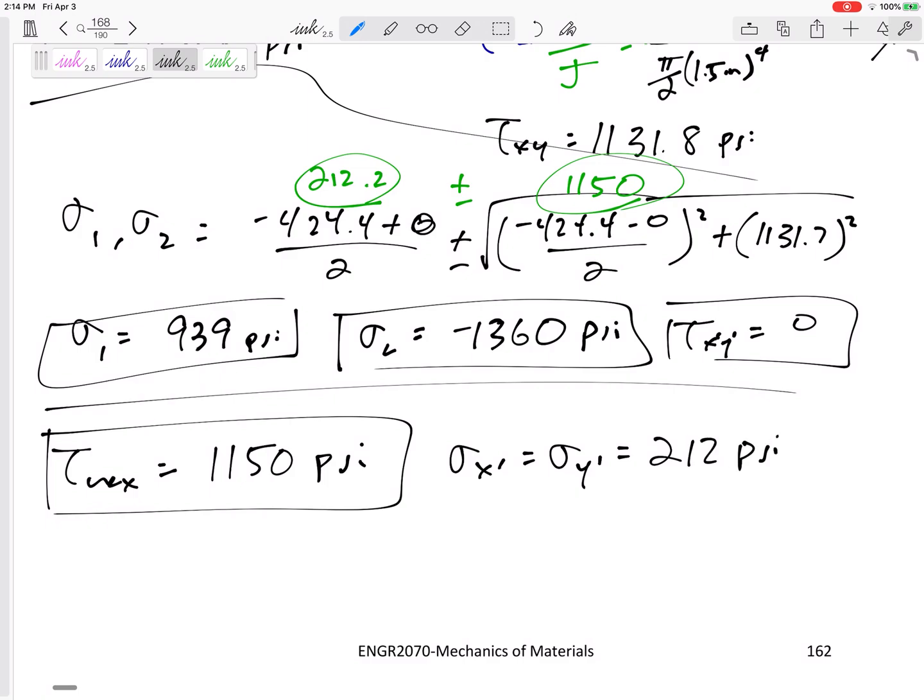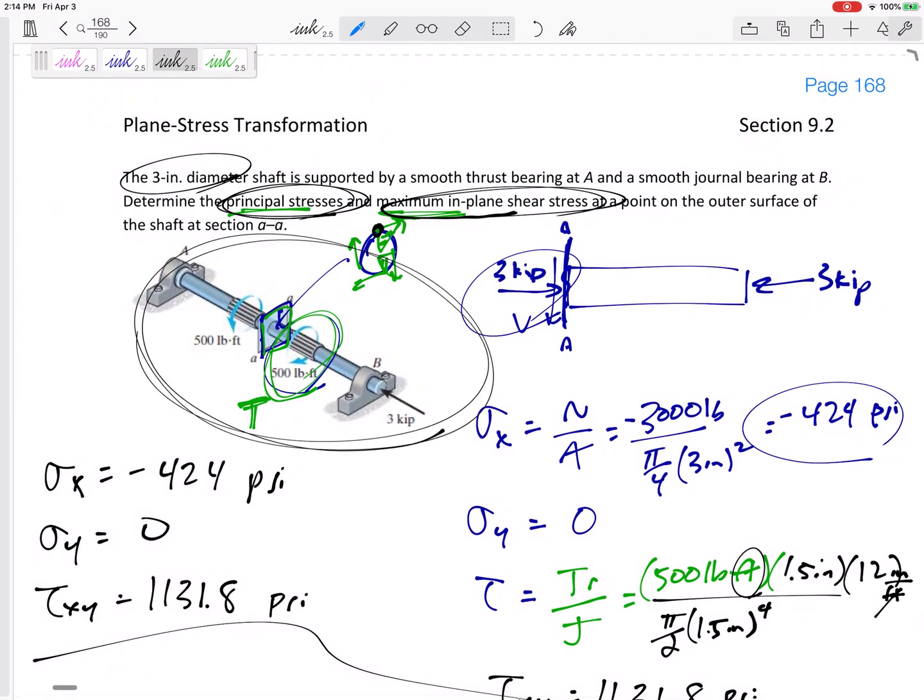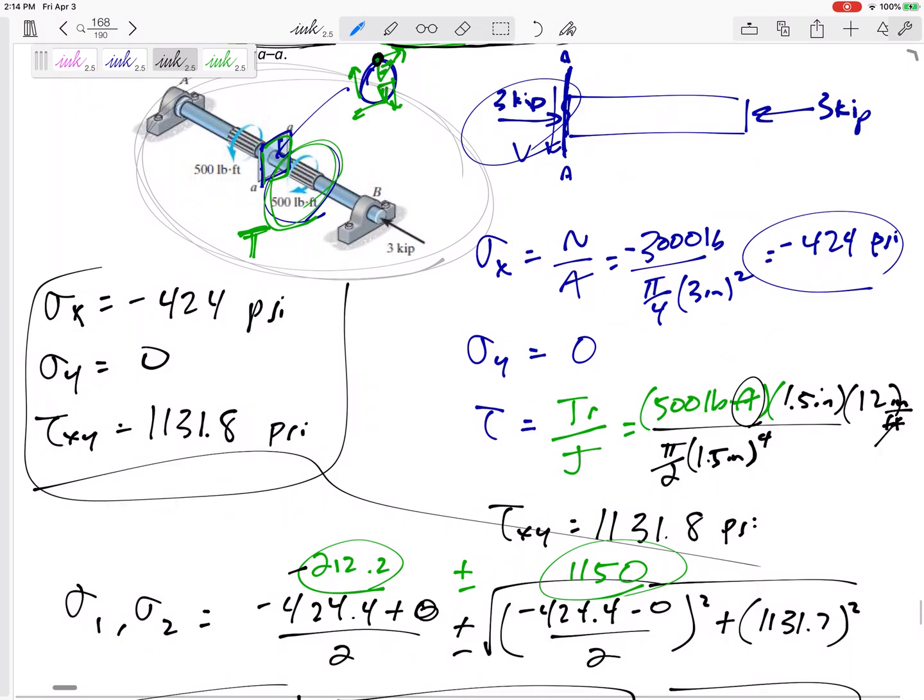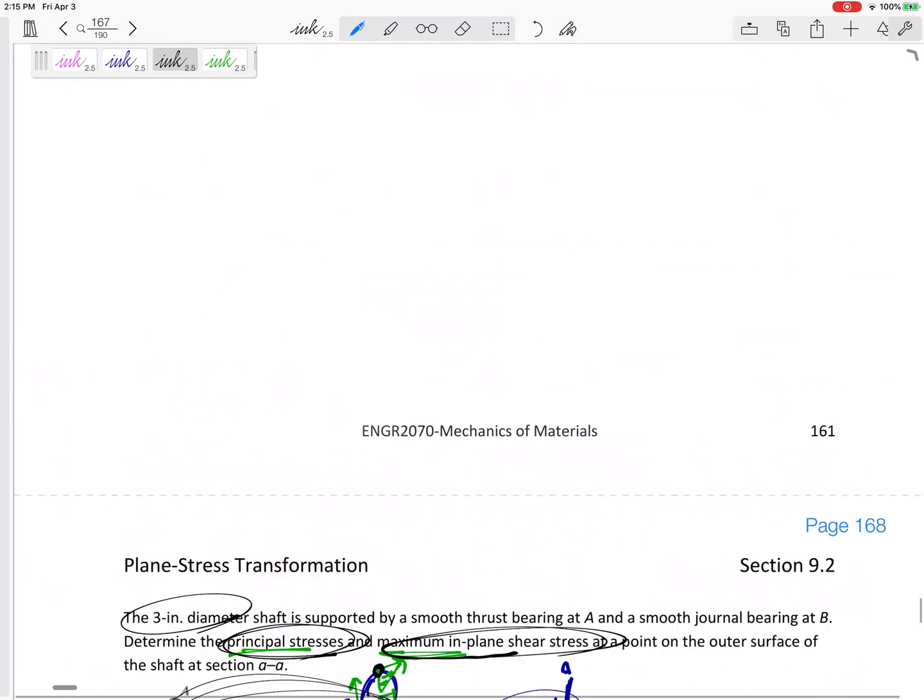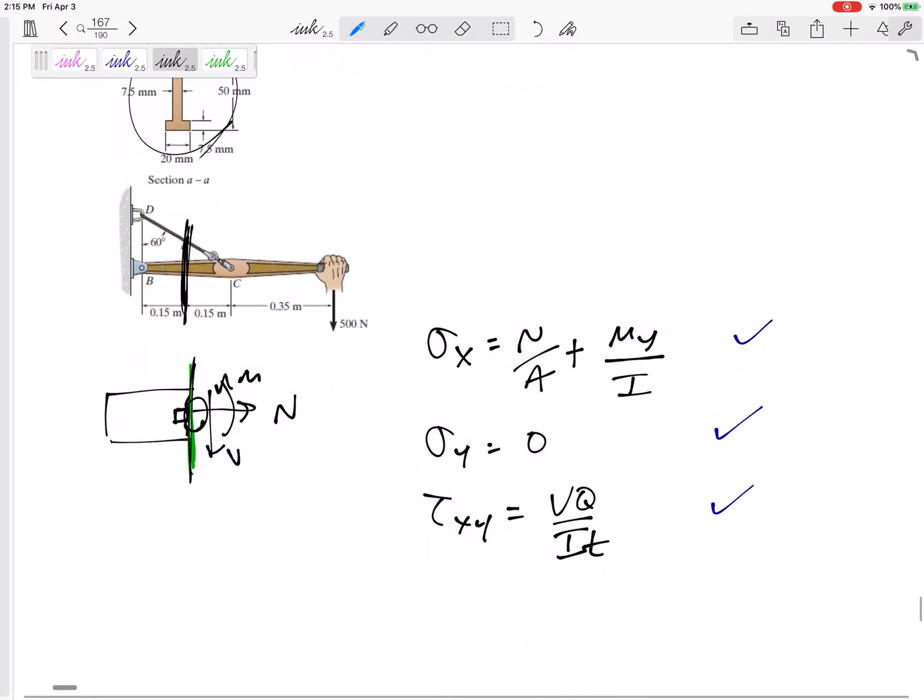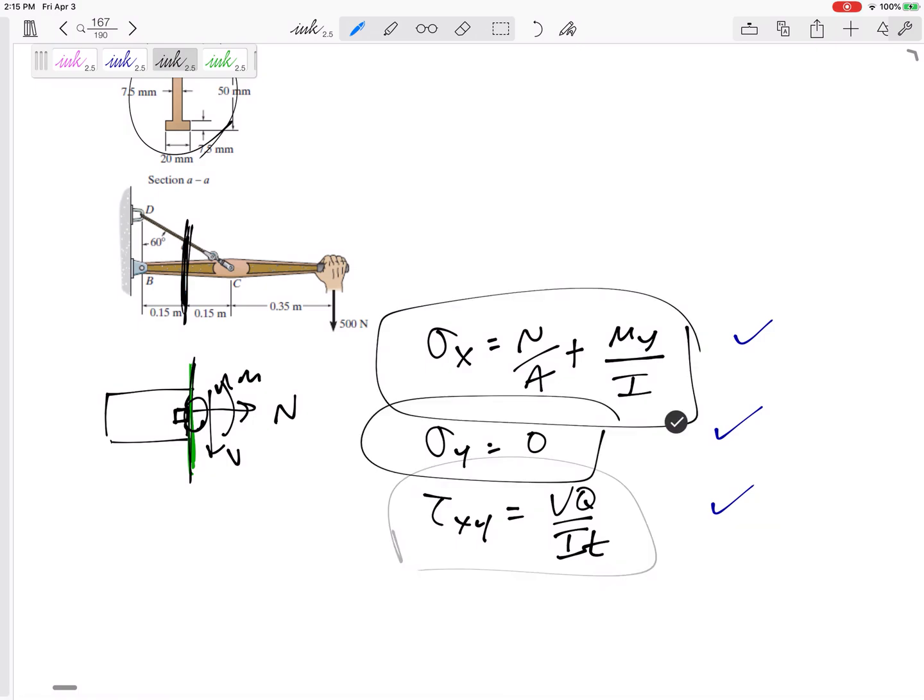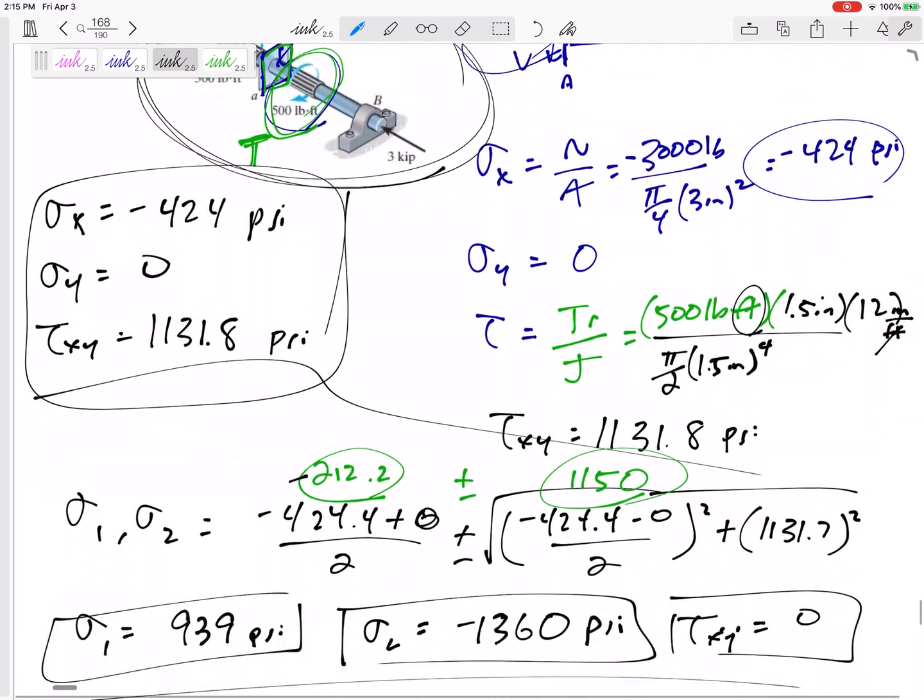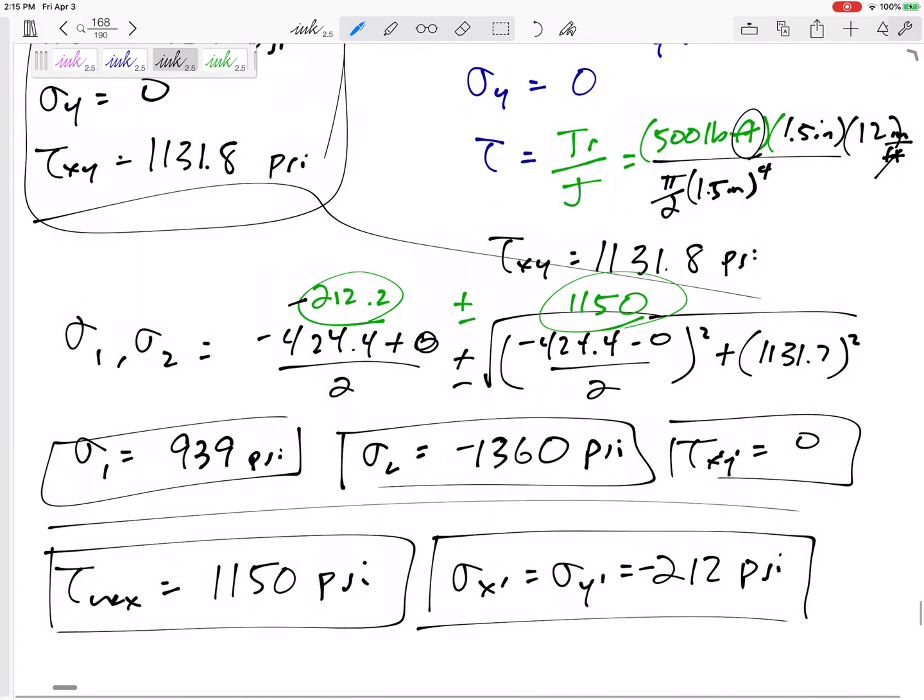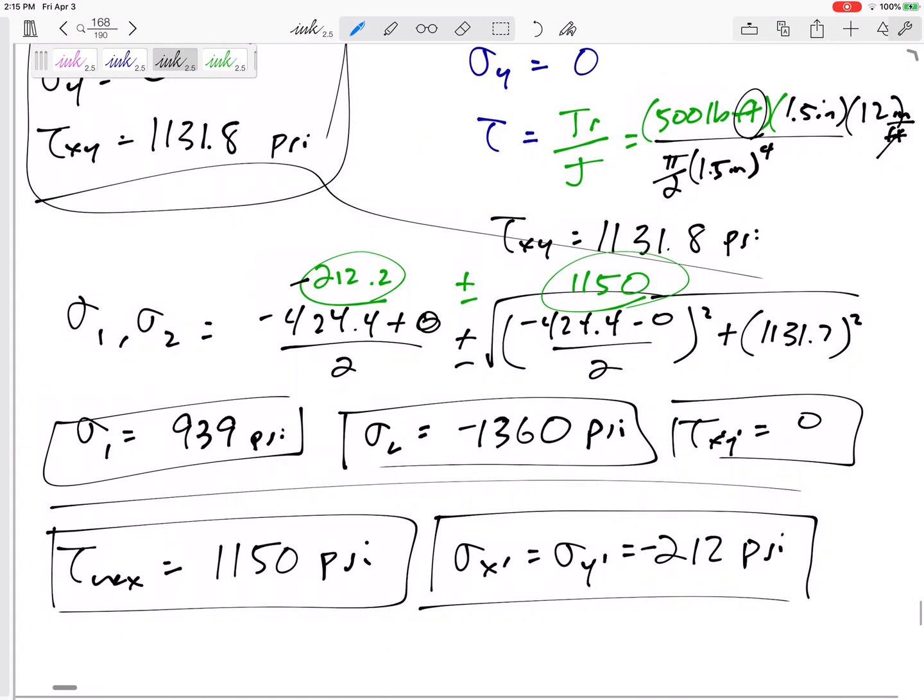So see, some problems you might have to work a lot harder to get these Sigma X, Sigma Y, tau XY. The problem before, we would have to work really hard finding those N, V, and M's to get those Sigmas and taus. Then it's just plugging in to our equations that are on our equation sheet.